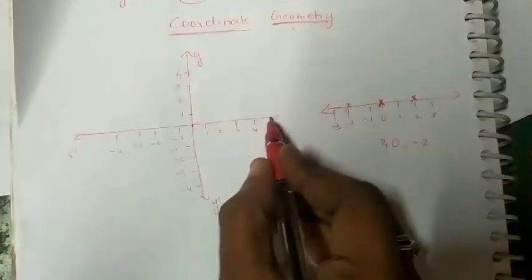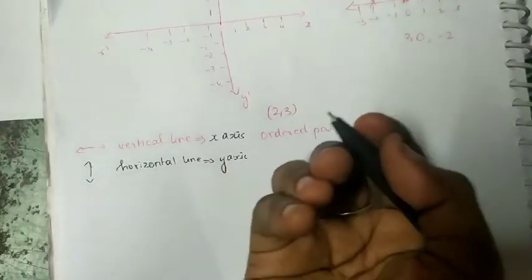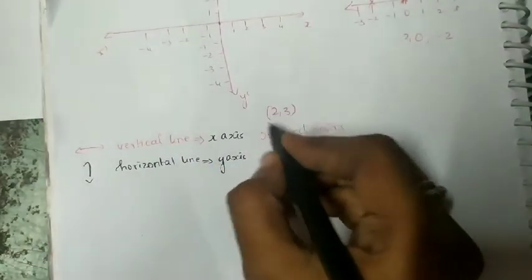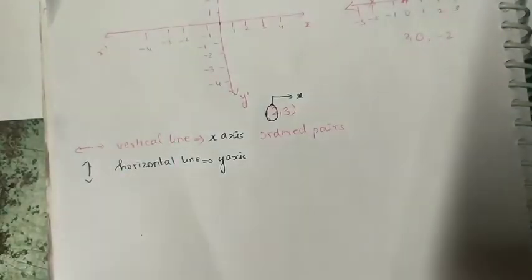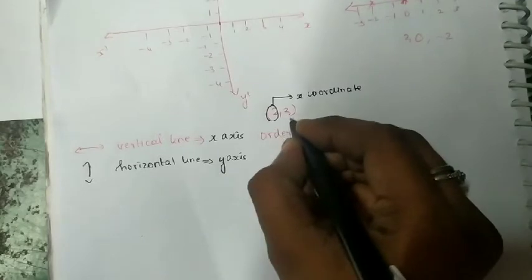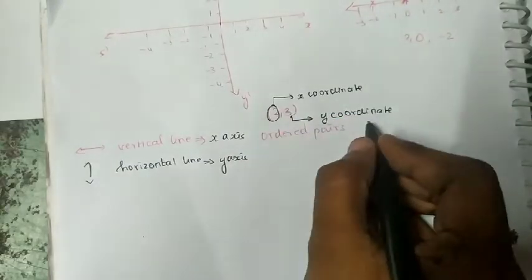You need to tell the students: this is the vertical line. Vertical line refers to the x-axis. And this is the horizontal line, and the horizontal line refers to the y-axis. You can also tell them in a funny way: this is a sleeping position — that refers to horizontal — and this is a standing position, which refers to vertical. Here, in the ordered pair, the first number refers to x-coordinate and the second number refers to y-coordinate.